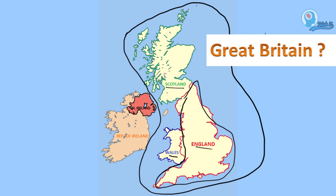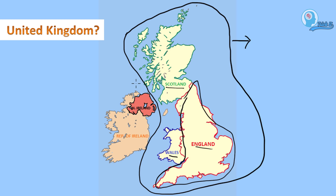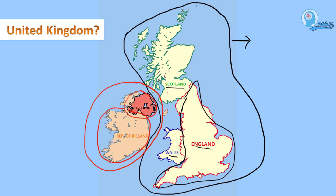What is United Kingdom? As you can see on the left, this whole portion is called Ireland. Ireland consists of two countries — the upper portion is called Northern Ireland and the lower portion is called Republic of Ireland. When we combine Northern Ireland with Great Britain, then it will be called as United Kingdom.